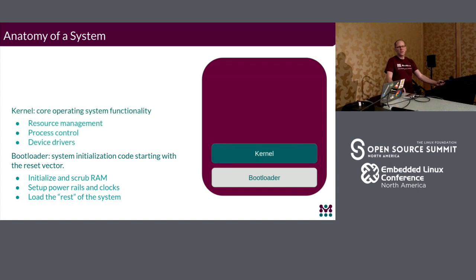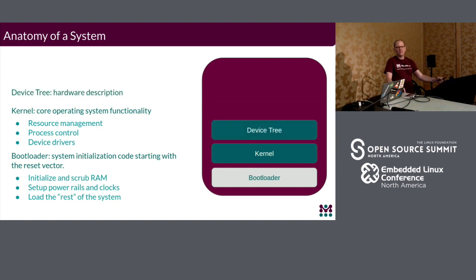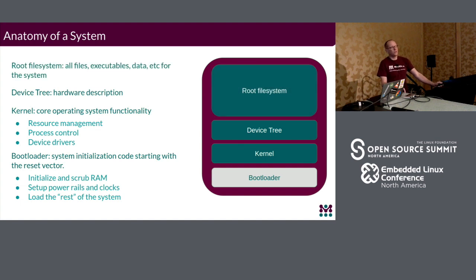From there, obviously, we have the Linux kernel — core operating system functionality, process control, device management, that kind of thing. Some architectures require a device tree, which is a description of the hardware that's separate from the kernel itself. And finally, the root file system, which is everything else — all the files, all the data for whatever your particular application is.